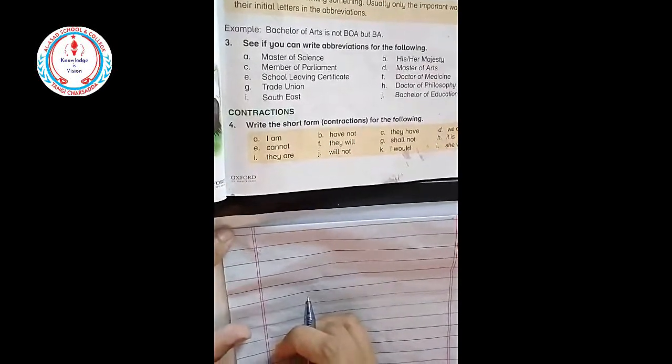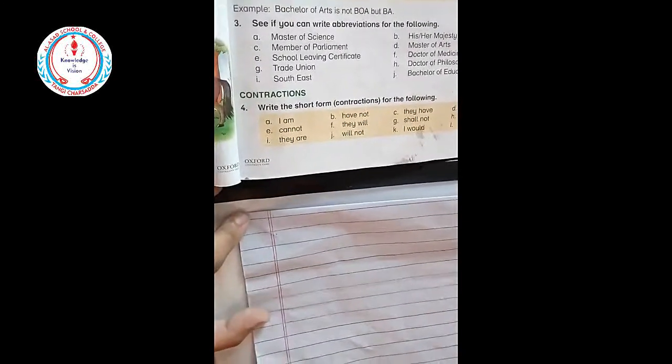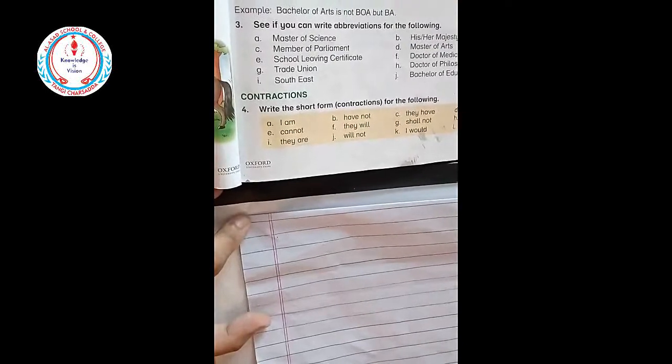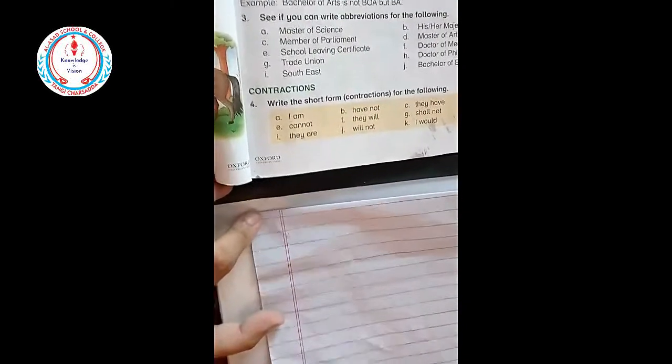Usually only the important words have their initial letters in the abbreviations. Generally, we write the important words in short form - this is called abbreviation. For example, Bachelor of Arts is not BA, but BA. For Bachelor of Arts we write BA.